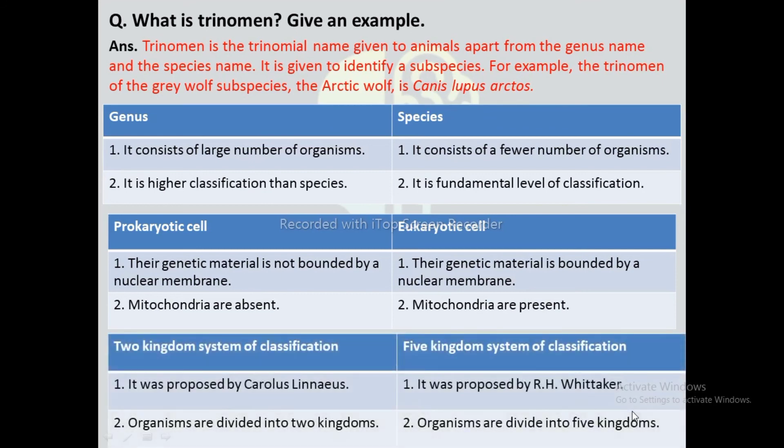Difference between two kingdom system and five kingdom system of classification: Two kingdom system of classification was proposed by Carolus Linnaeus, whereas five kingdom system was proposed by R.H. Whittaker. Organisms are divided into two kingdoms in the two kingdom system, whereas organisms are divided into five kingdoms in the five kingdom system.